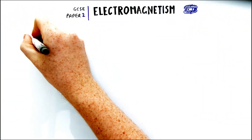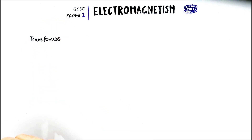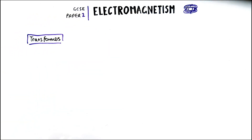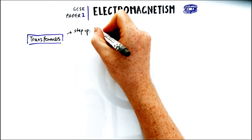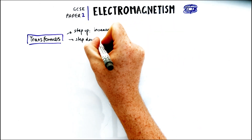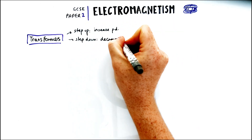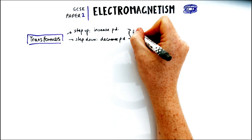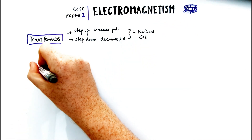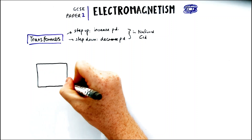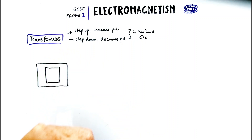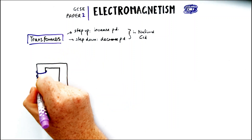Finally, let's talk about transformers. Transformers are part of the national grid and you can have either step-up or step-down transformers. Step-up transformers will increase the potential difference to reduce heat loss. Step-down transformers will decrease the potential difference to make it safe to use in homes.